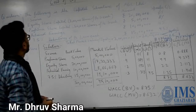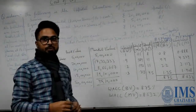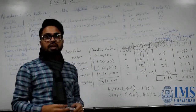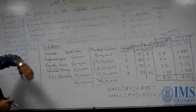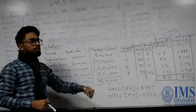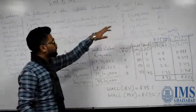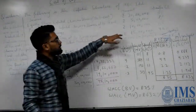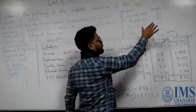Good morning students. Today we are discussing financial management topic: cost of capital. In cost of capital, we should learn how to calculate weighted average cost of capital. In this question, the following capital structure is given — these are the funds from where we borrow: equity shares 20 lakh, preference shares 5 lakh, retained earnings 10 lakh, and debentures 15 lakh.